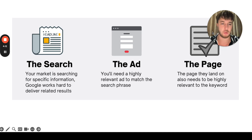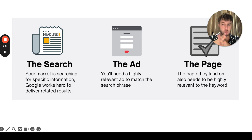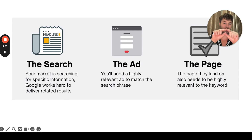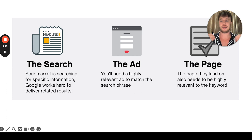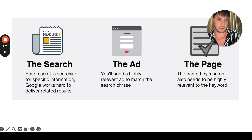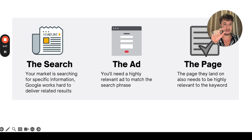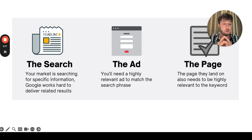How Google AdWords — how Google Ads — works: the first thing is the search. Your audience is searching for specific information. Google Ads works hard to deliver related results, so if someone searches 'how to lose my weight' or 'how to get rid of my back pain,' Google is going to show your website with your headline and URL. You need a highly relevant ad to match the exact search phrase, with relevant keywords inside the headline and copy. And the page they land on will also need to be highly relevant to the keyword.